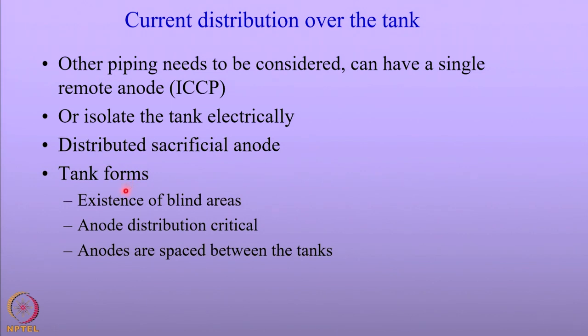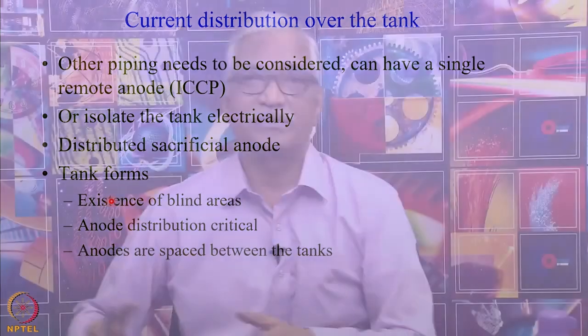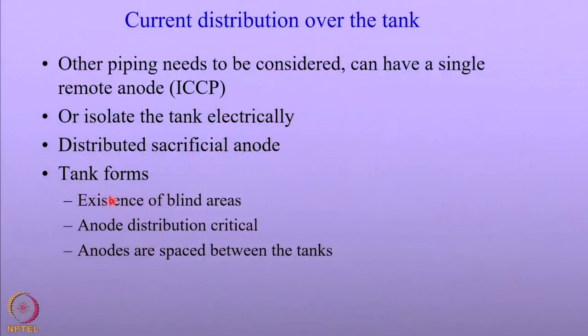You can also have distributed sacrificial anodes. In tank farms where multiple tanks are present, you can have distributed anodes between the tanks, with anodes installed so that the current is evenly distributed. The whole idea is that the current distribution has to be uniform, and the configuration of the anodes is done accordingly.